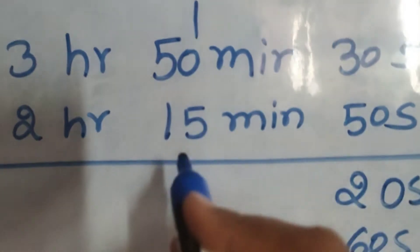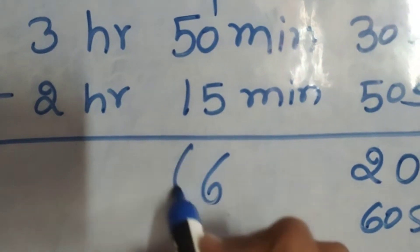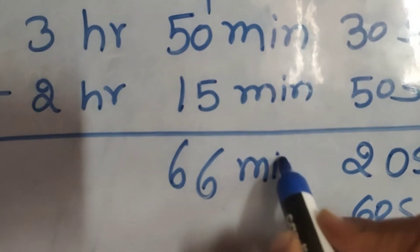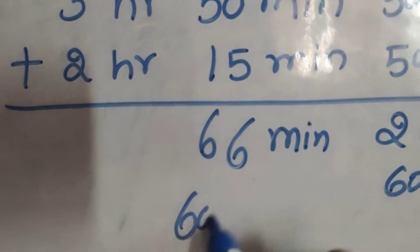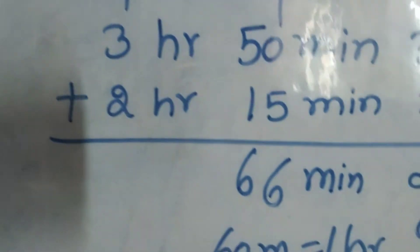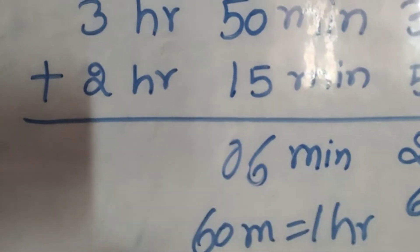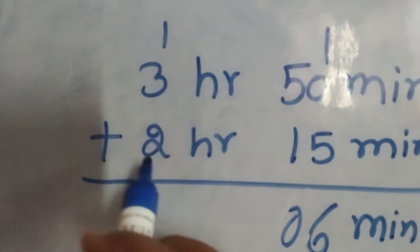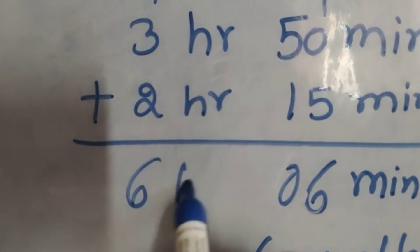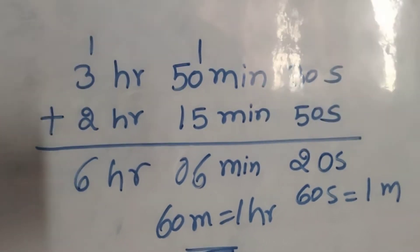Next, 1 plus 5 is 6, 5 plus 1 is 6, giving 66 minutes. As we know, 60 minutes is equal to 1 hour, so we carry 1 and 6 minutes remain. Then 4 plus 3 is 4, and 4 plus 2 is 6. The answer is 6 hours 6 minutes and 20 seconds.